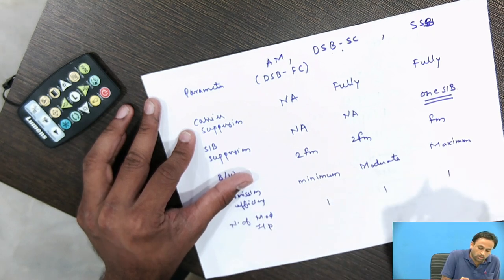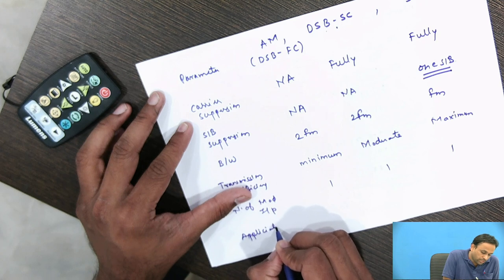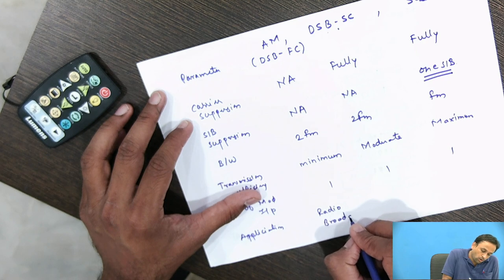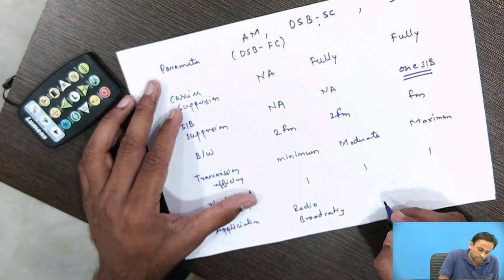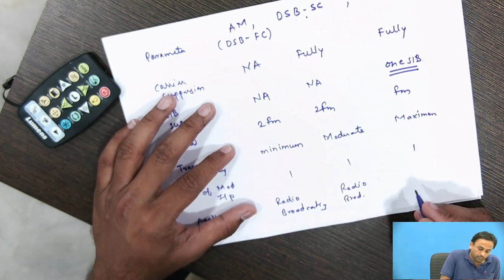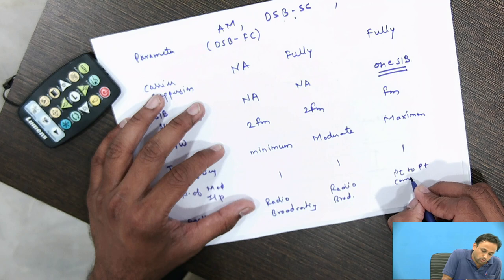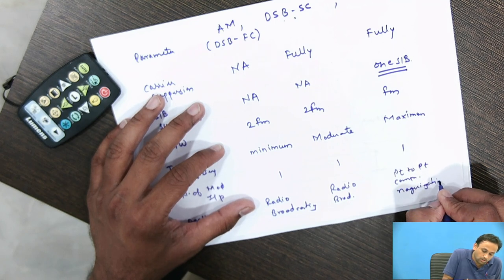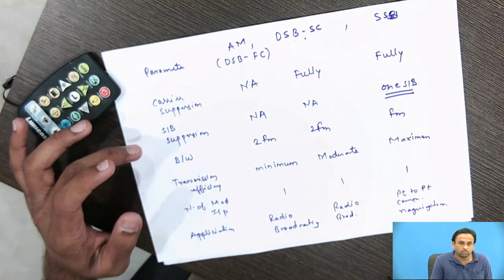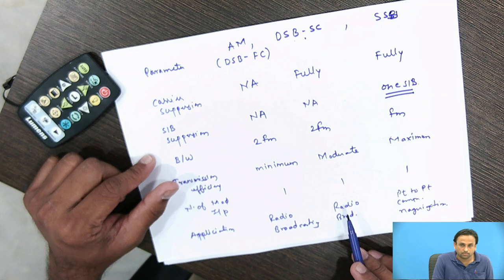The number of modulating inputs is one for all three. For applications, AM is used in radio broadcasting, DSB-SC is also used in radio broadcasting, and SSB is used in navigation and point-to-point communication systems. These are the key parameters for comparing AM, DSB-SC, and SSB.